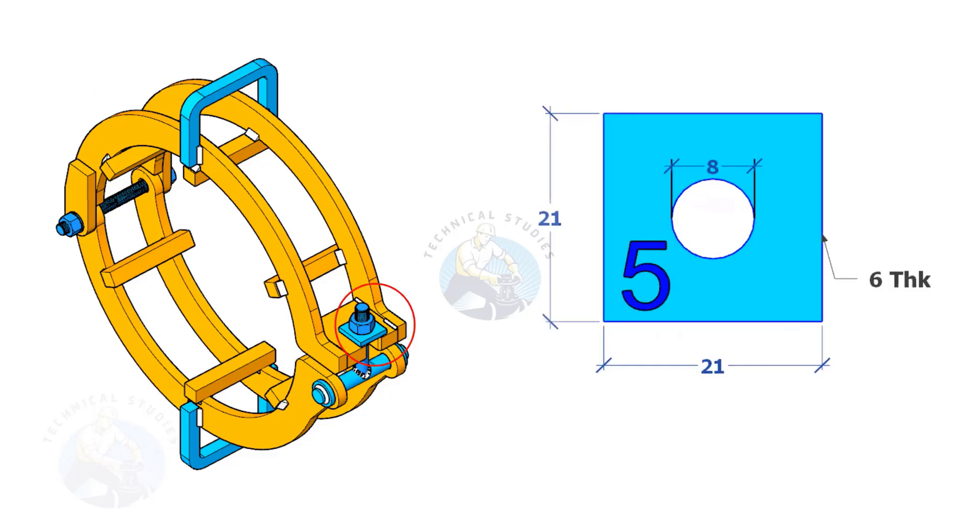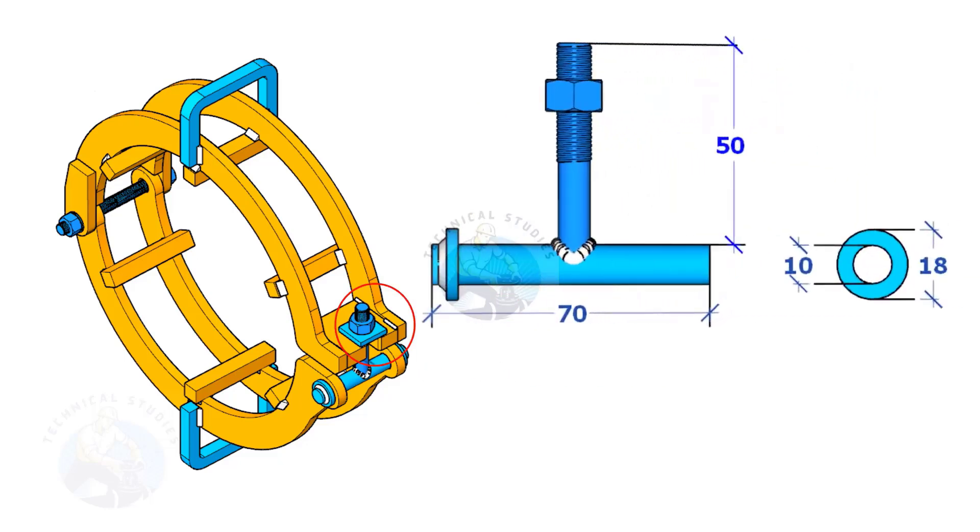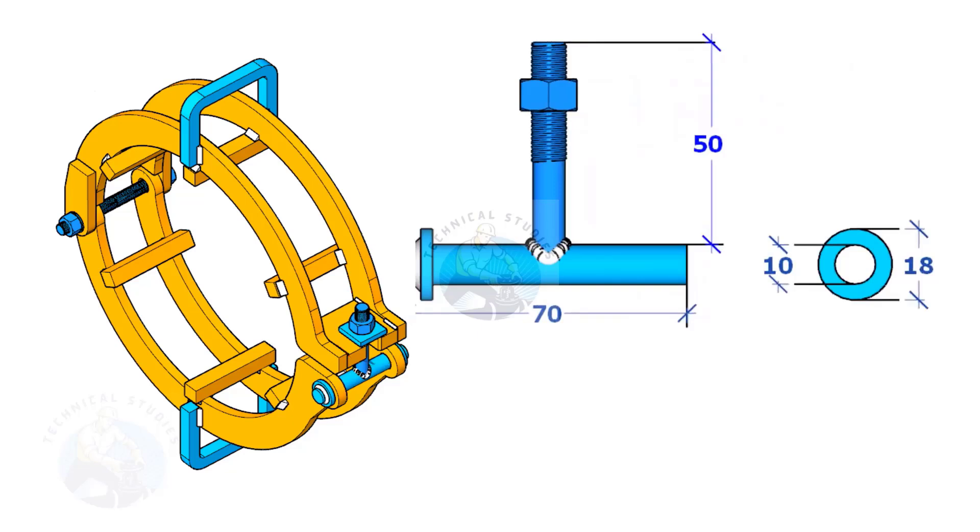Cut one square washer like this. The threaded part shall be cut from a bolt. Up to 6-inch pipes, the diameter shall be 8 millimeters to 12 millimeters.